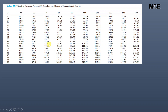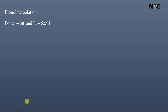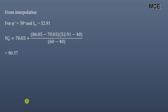For φ' = 38° and I_rr = 40, N_σ = 70.03 from the table. For φ' = 38° and I_rr = 60, N_σ = 86.05. By interpolation for φ' = 38° and I_rr = 52.91, the value of N_σ = 80.37.